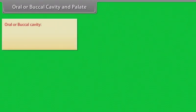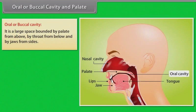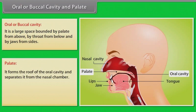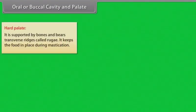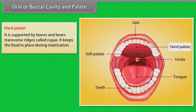The oral or buccal cavity is a large space bounded by the palate from above, by the throat from below, and by the jaws from the sides. The palate forms the roof of the oral cavity and separates it from the nasal chamber. It is divided into the hard palate and soft palate. The hard palate is supported by bones and bears transverse ridges called rugae, which keep the food in place during mastication.